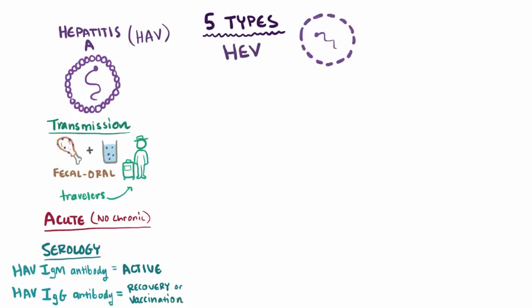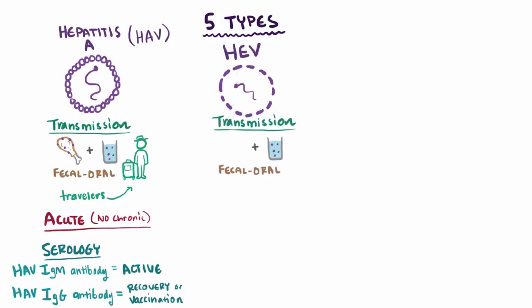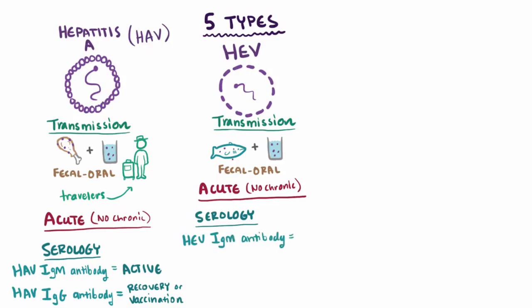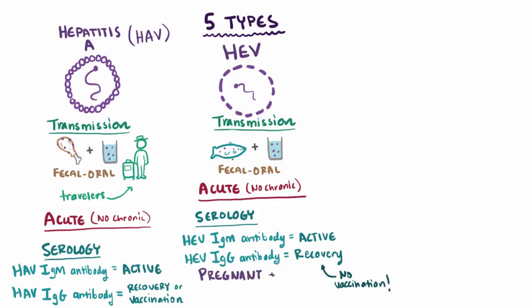Hepatitis E virus is actually pretty similar to HAV, with the same fecal-oral route of transmission, and is most commonly acquired through undercooked seafood or contaminated water. It also doesn't have much of a chronic state, and HEV-IgM antibodies indicate active infection, while HEV-IgG is protective and signals recovery, just like HAV. Two key differences: only HAV has the option for immunization, and HEV infection in pregnant women can be very serious, potentially leading to acute liver failure, also called fulminant hepatitis.